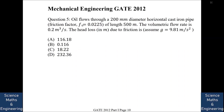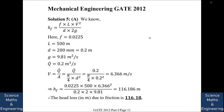Oil flows through a 200 mm diameter horizontal cast iron pipe of length 500 m with a given friction factor, and the volumetric flow rate Q is 0.2 m³/s. We need to find the head loss in meters due to friction. Using the Darcy-Weisbach equation, hf = f·L·V²/(D·2g), with the area computed from D, we get hf equal to 116.186 meters.